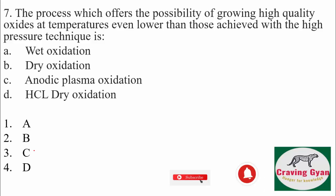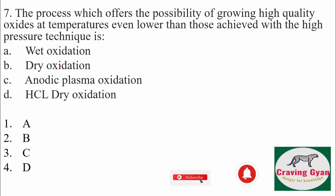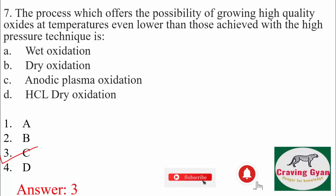Seventh question: the process which offers the possibility of growing high quality oxides at temperatures even lower than those achieved with the high pressure technique. Options are wet oxidation, ray oxidation, anodic plasma oxidation, and hydrochloric ray oxidation. We know we are going to make use of anodic plasma oxidation, hence option 3 is going to follow.